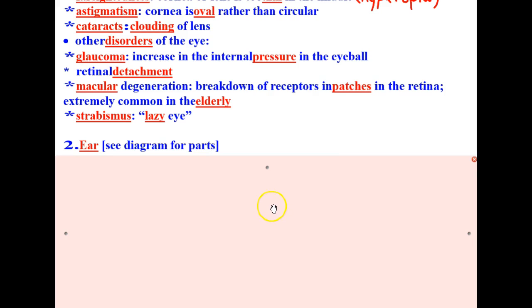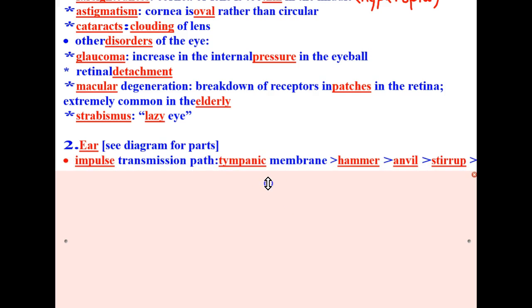Now let's take a look at the structures of the ear and their functions. The impulse transmission path for sound is from the tympanic membrane to the hammer, to the anvil, to the stirrup, to the cochlea, and to the auditory nerve. So that would be the pathway for sound.